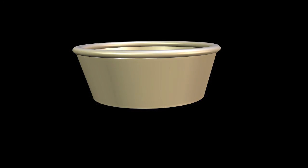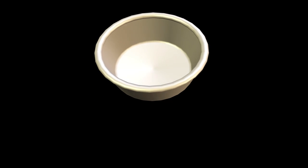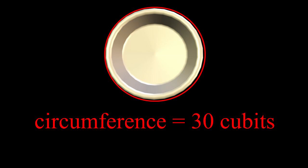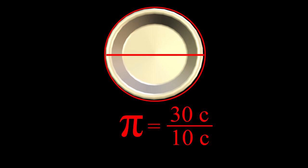A cubit is an ancient unit of measurement, approximately 46 centimeters. This script tells us that this pool had a diameter of ten cubits and a circumference of thirty cubits. Dividing circumference by diameter gives us a value for pi of three, that is within five percent of currently accepted values.